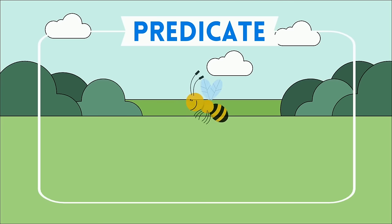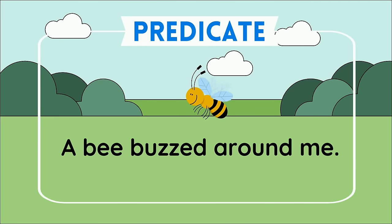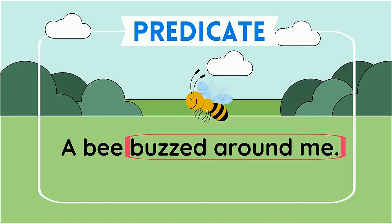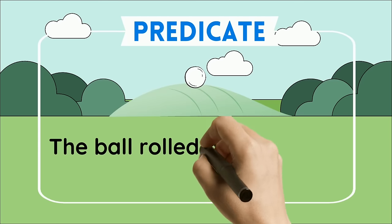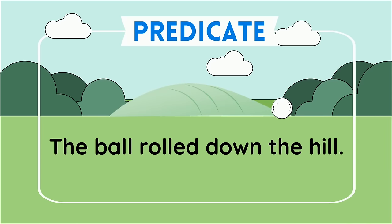Can you guess what the predicate is in the next sentence? A bee buzzed around me. Buzzed around me is the predicate because this part of the sentence tells what the bee did. Good job! Let's try one more. The ball rolled down the hill. What's the predicate? Good job! Rolled down the hill is the predicate because it tells what the ball did.